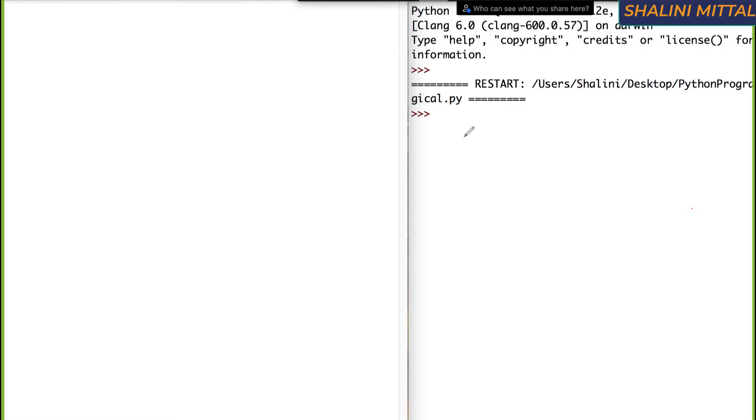let's say we have to represent this expression. So let me write over here. So I'll say 2x plus 3y. Now we understand this mathematical expression that is it is 2 into x plus 3 into y. But when you write in programming languages, they do not understand this.